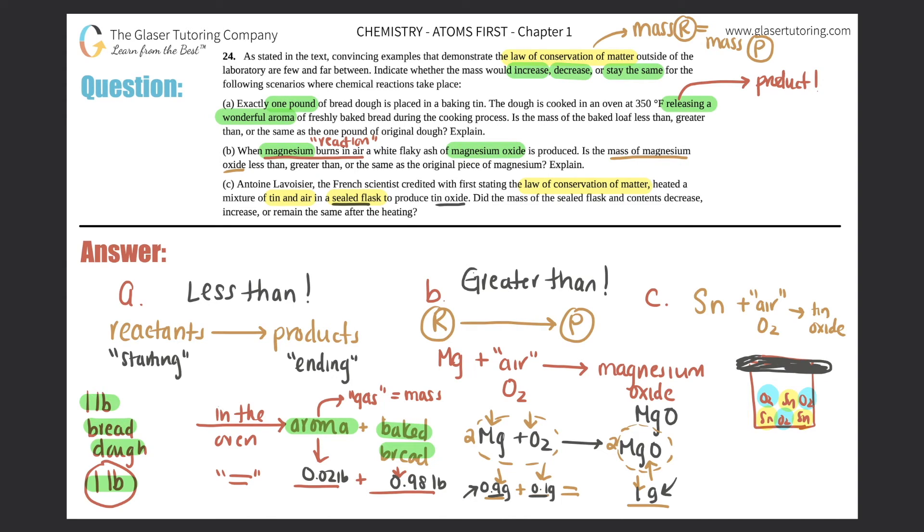Do you think that the mass of the sealed flask and the contents inside decrease, increase, or remain the same? Since it's sealed - that is my dog, I'm sorry, he gets excited, he's a crazy boy - since this is sealed, literally nothing would be able to get out, right? These would be reacting, but nothing would be able to get out. So the mass would remain the same.